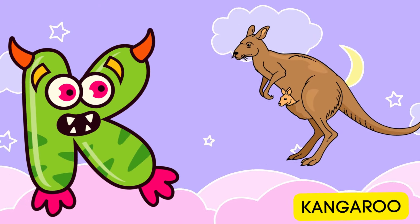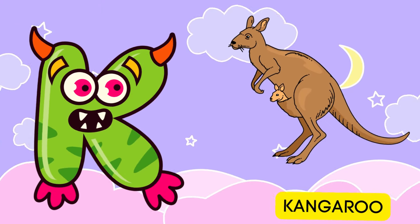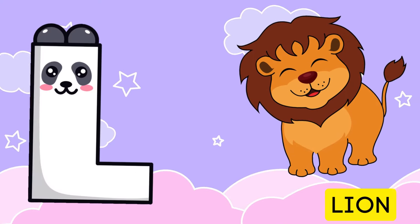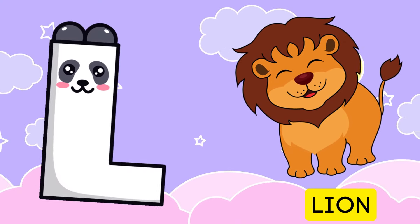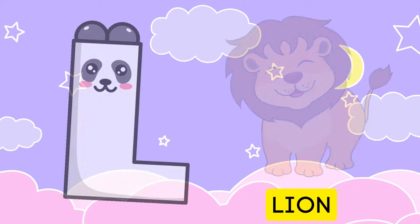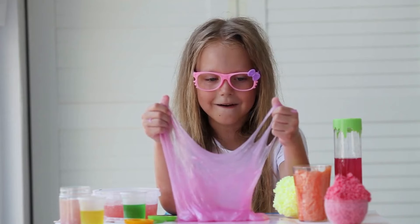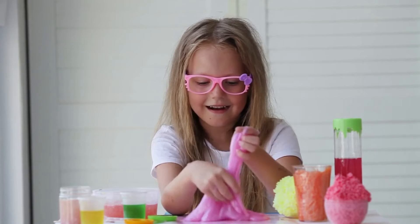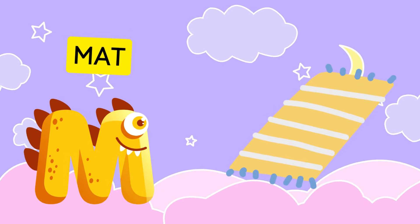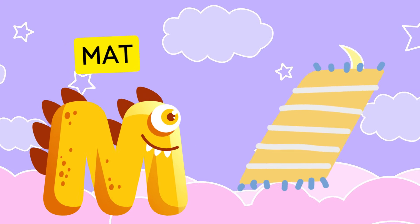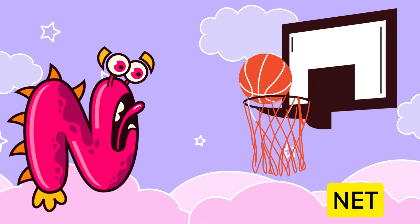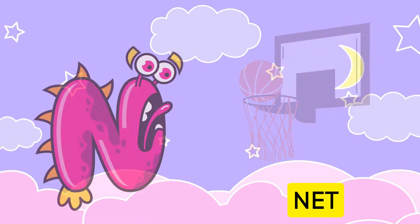K is for kangaroo, k-k-kangaroo. L is for lion, l-l-lion. M is for mat, m-m-mat. N is for net, n-n-net.